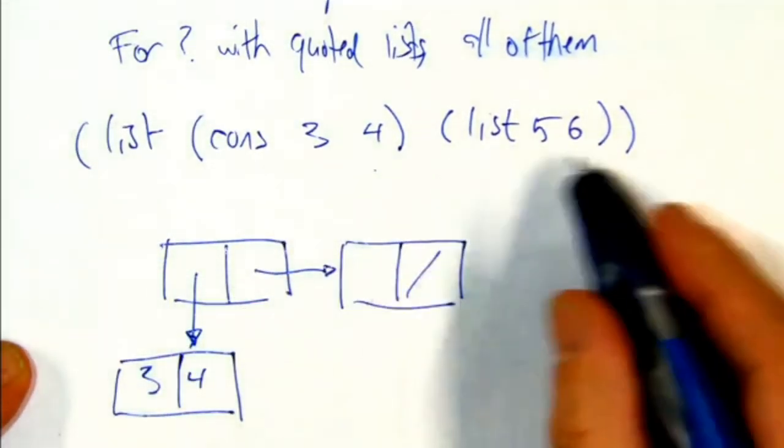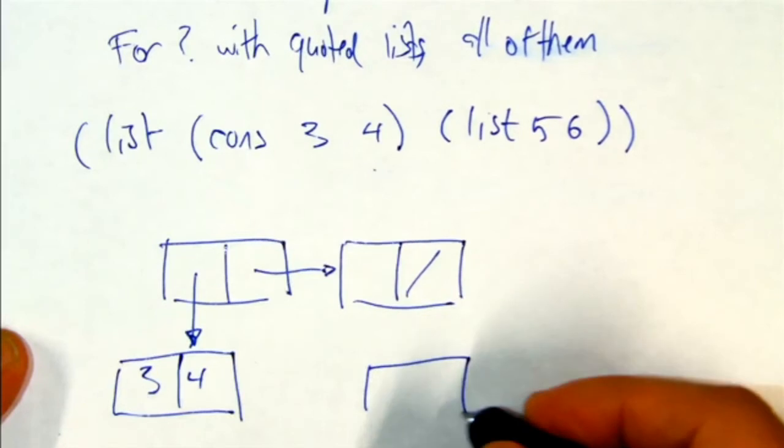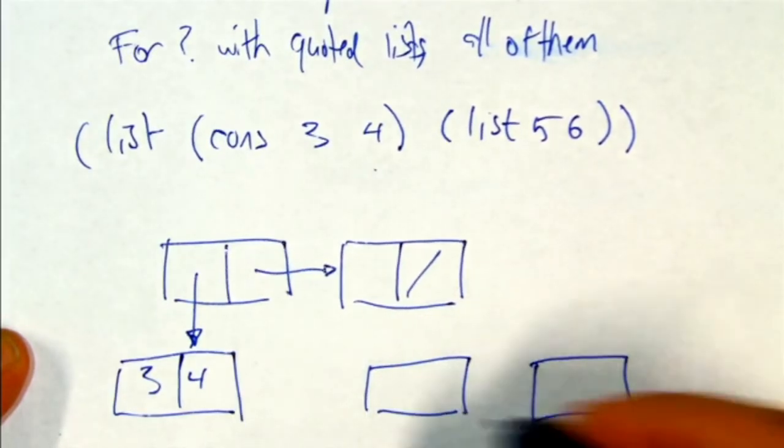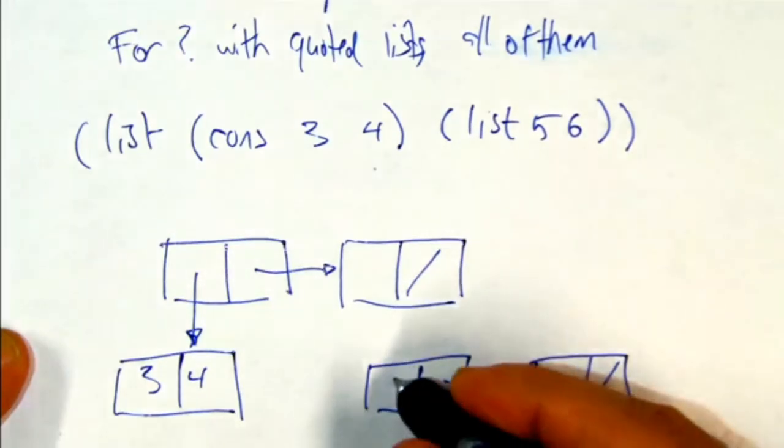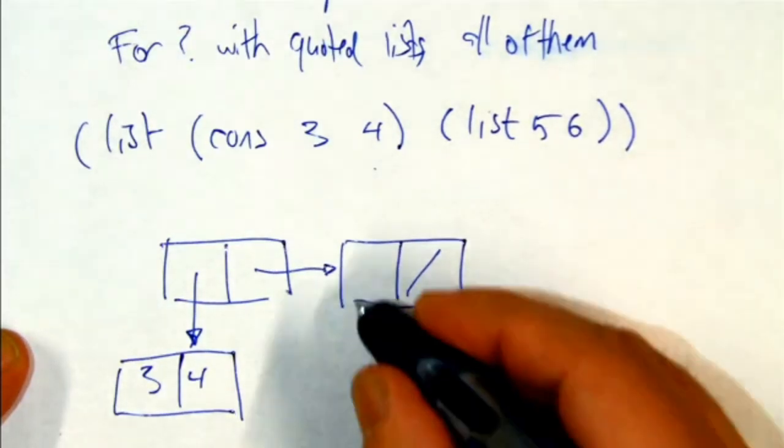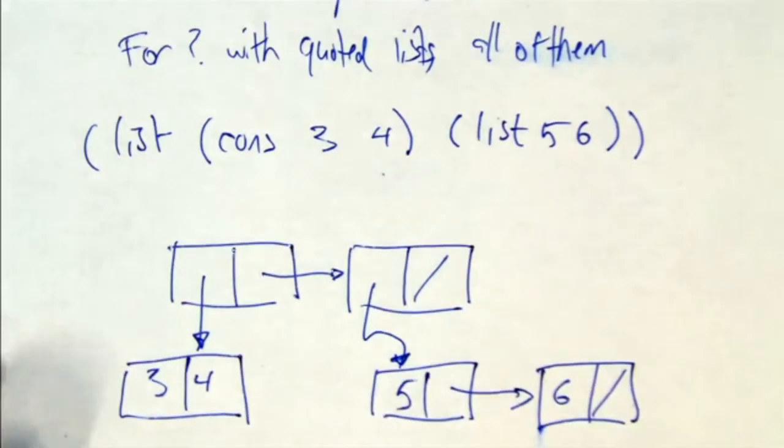And the second thing is a list of two things. The two things being the list five, six. And that's the second thing. So there it is.